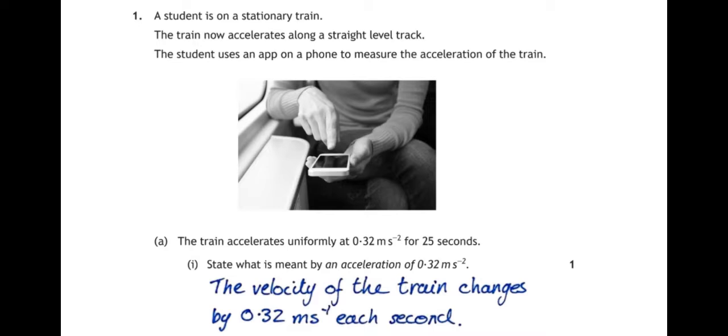Because the value is given in the question, we need to give the value in the answer. So just answering the velocity or the change in the velocity of the train per second would not be acceptable. We need to mention that the change in velocity of the train per second is 0.32 meters per second.